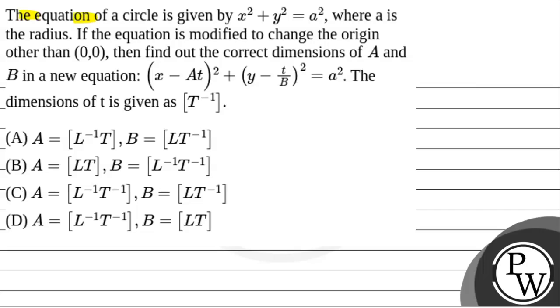The equation of a circle is given by x² + y² = a², where a is the radius. If the equation is modified to change the origin other than (0,0),